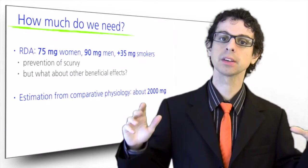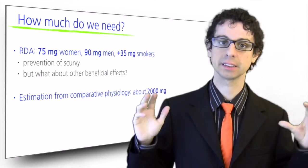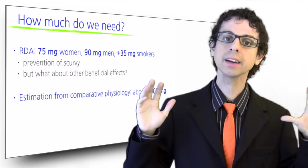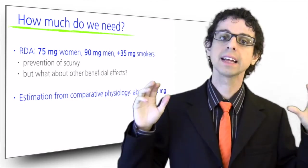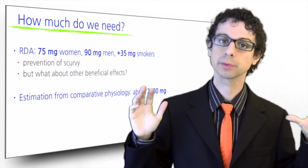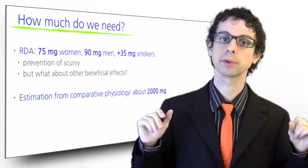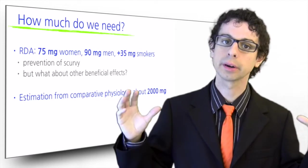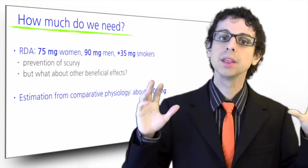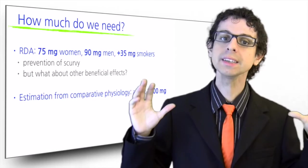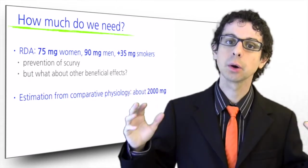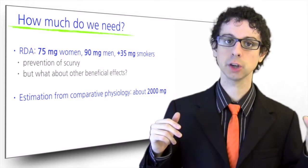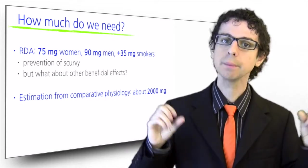And here we come across an apparent controversy of classical nutrition. Although it has recently been increased, the current RDA for vitamin C is set at 75 milligrams for women and 90 milligrams for men, to be increased by 35 milligrams by smokers since smoke destroys some of it. These amounts are about 20 times lower than the dose identified by the above-mentioned studies of comparative physiology. Where do these numbers come from?